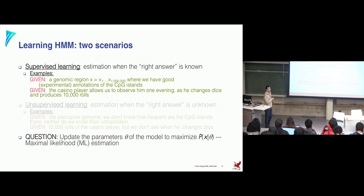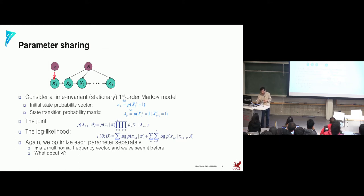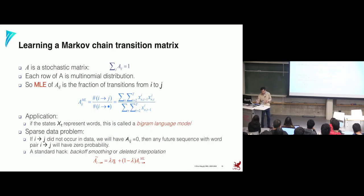Let's quickly look at learning. We have all the ingredients already. For supervised learning, where both X and Y are observed, we make the parameter sharing assumption: applying stationarity, the same transition matrix A applies to all time steps. Under this assumption, maximum likelihood estimation gives a very trivial result: the transition probability is just the count of transitions between two states divided by all transitions out of that state — a counting exercise. The emission probability is similarly a frequency estimation.